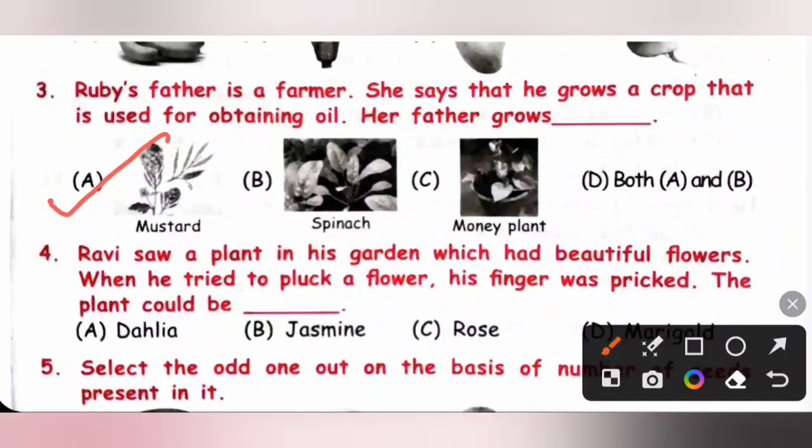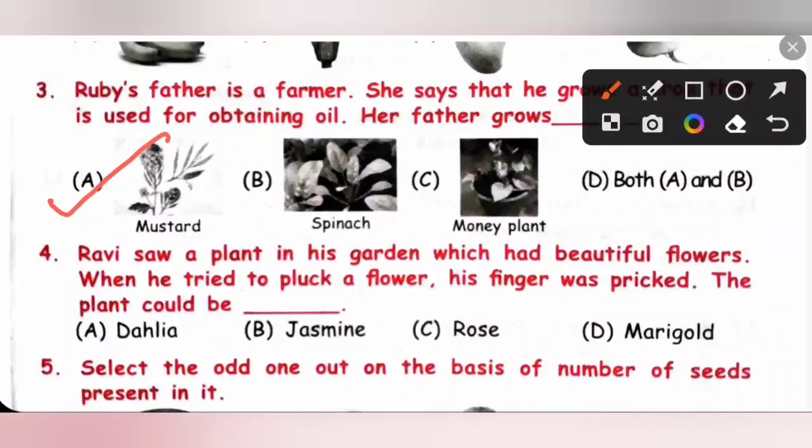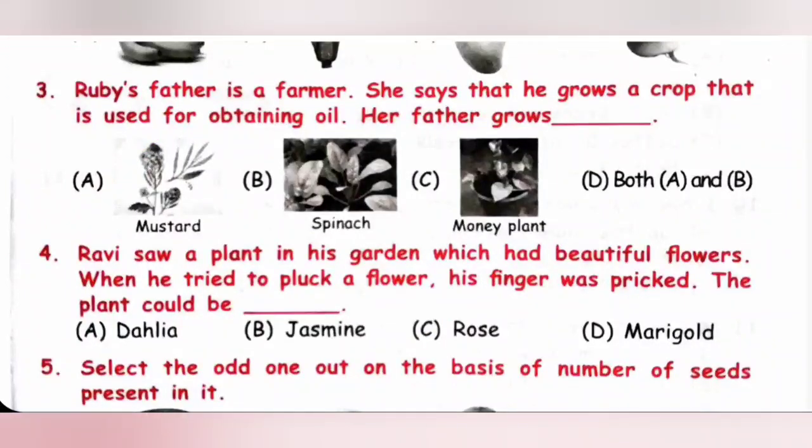Fourth one, Ravi saw a plant in his garden which had beautiful flowers. When he tried to pluck a flower, his finger was pricked. The plant could be dash. We know some plants have thorns for their protection. Rose plant has thorns. So option C, rose is the correct answer.